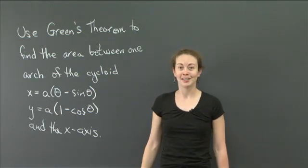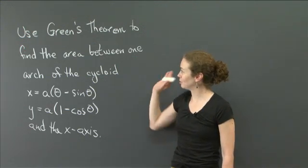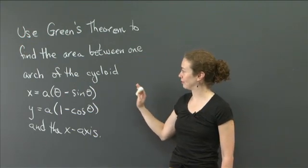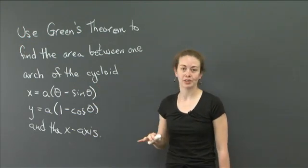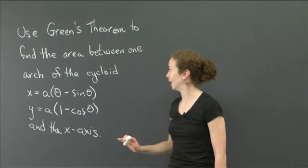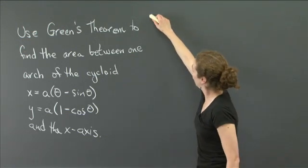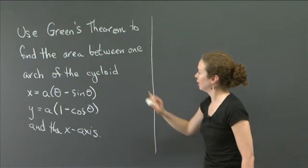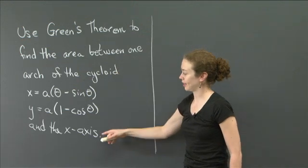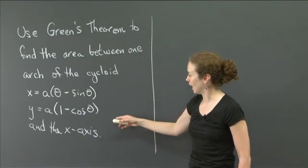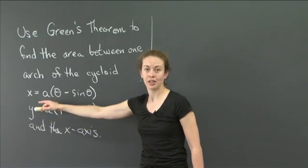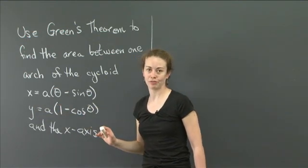Welcome back. We want to use Green's theorem to find an area. First, I'll figure out what the picture looks like, then how to use Green's theorem in this region. Let's draw a sketch. Since we want the area between one arch of the cycloid and the x-axis, we need to figure out what θ values make y ≥ 0.